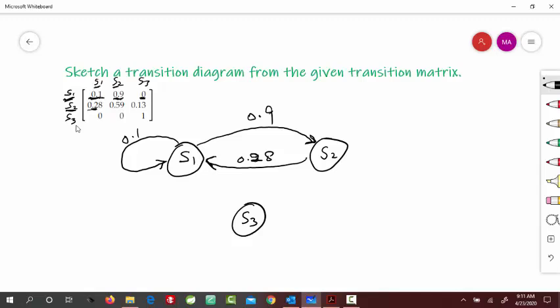And then 0.52 is S2 to S2. Starting arrow and coming back here, 0.52. And then 0.13 here, that's S2 to S3. So from S2 to S3 here, this arrow, 0.13.